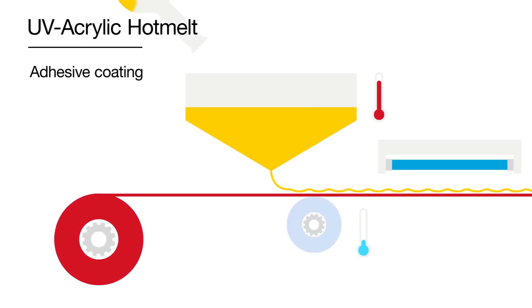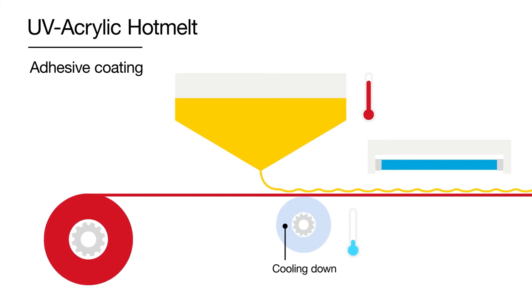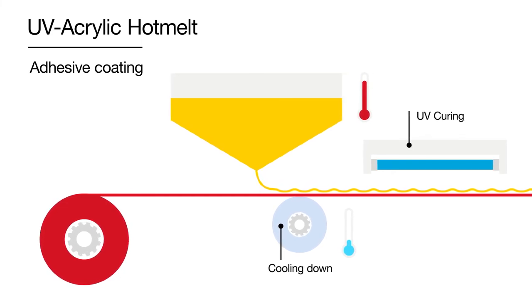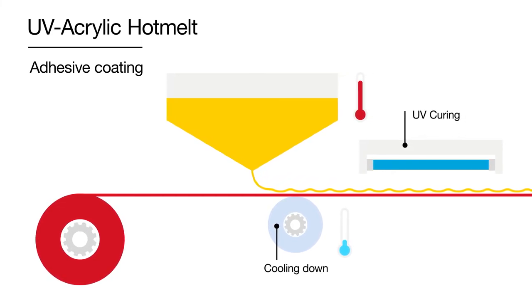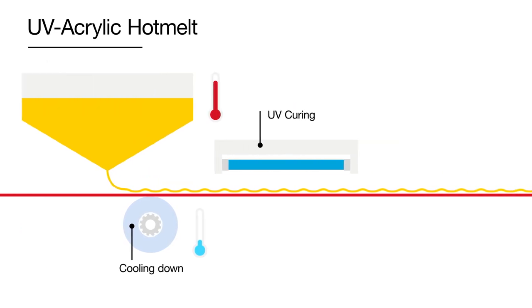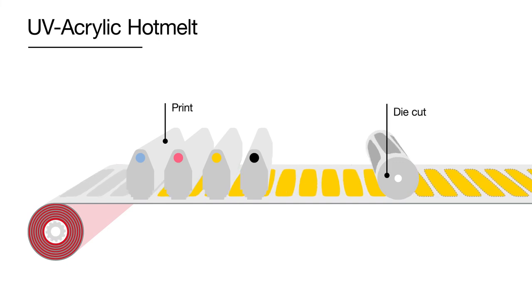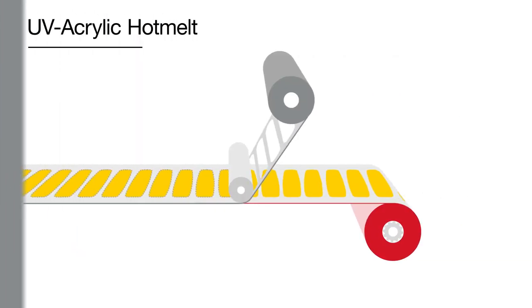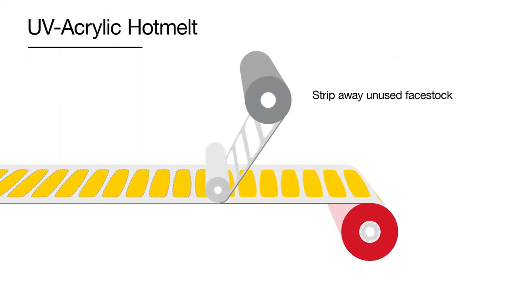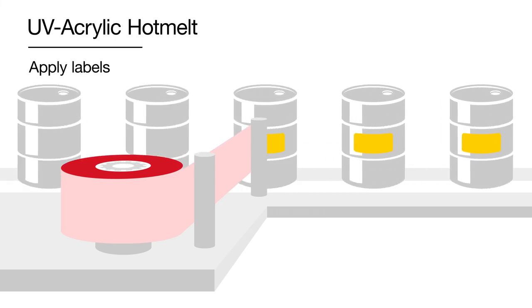When making labelling materials, we apply the adhesive onto a liner, cool it down and then expose it to UV light. This initiates a chemical reaction that bonds molecules together into one network. Finally, we lay the face material on top. Label converters can then print and die cut the finished roll and strip away unused face stock material. The labels are now ready for the end user to apply onto packaging.